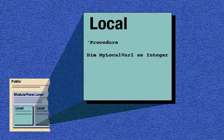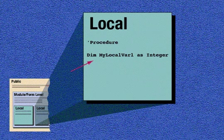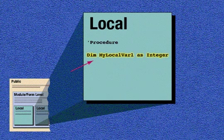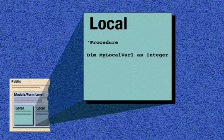Let's begin with local variables. Local variables are the most restrictive with respect to scope. Sometimes called procedural-level variables, these can only be seen within the procedure that's currently running. When your program enters the procedure, memory is allocated for the variable. When the procedure is complete, all of the memory resources for the variables declared within the procedure are freed.